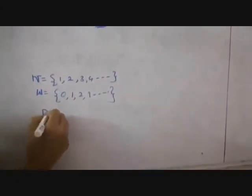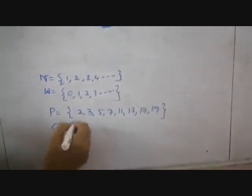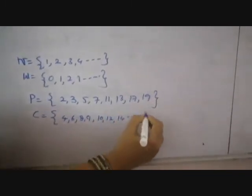Always remember: natural numbers are denoted with letter N and start from 1, 2, 3, 4 and so on. Whole numbers start from 0, 1, 2, 3 and so on, denoted with the letter W. What are prime numbers? 1 is neither prime nor composite. Remember: 2, 3, 5, 7, 11, 13, 17, 19 — at least remember prime numbers up to 50. Composite numbers have more than 2 factors: 4, 6, 8, 9, 10, 12, 14 and so on. At least remember prime and composite numbers up to 50.